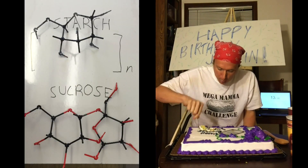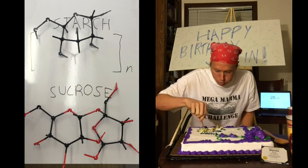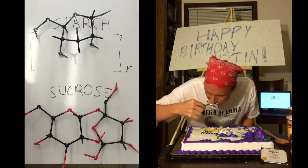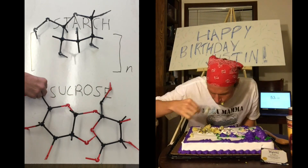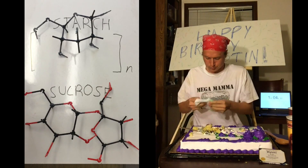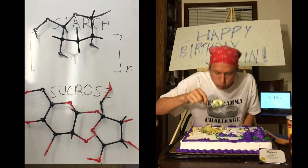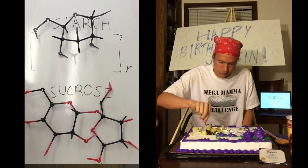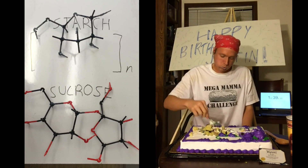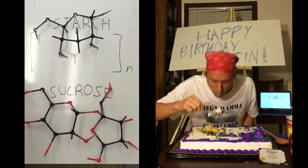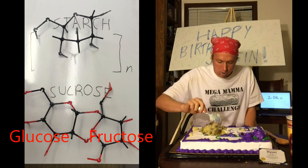So what is diabetes? To answer that, let's start by looking at a couple of molecular models. On the bottom here, we have a sucrose molecule, also known as table sugar. The black atoms are carbon and the red atoms are oxygen. Sucrose is what we call a disaccharide — di means two. It is composed of two molecules: glucose and fructose.